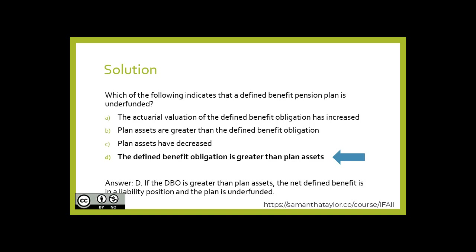The answer is D. Which of the following indicates the defined benefit pension plan is underfunded? It's when the defined benefit obligation is greater than the plan's assets. That's all for this video. We're going to look at a comprehensive walkthrough of a defined benefit pension plan in the next. I'll see you there.